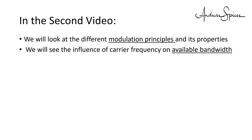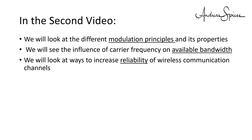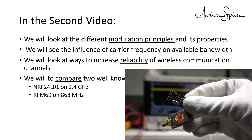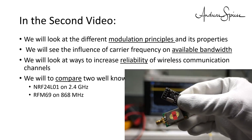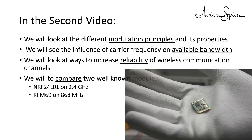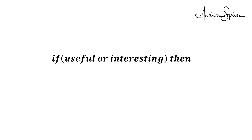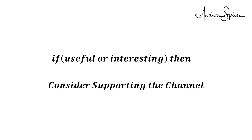In the second part, we will look at the different modulation principles and their properties, and see the influence of carrier frequency on available bandwidth. We will also look at ways to increase the reliability of wireless communication channels. At the end, we will compare two well-known modules: a NRF24L01 on 2.4 GHz and a RFM69 on 868 MHz. I hope this video was useful or at least interesting for you. If so, please consider supporting the channel to secure its future existence — you find the links in the description.